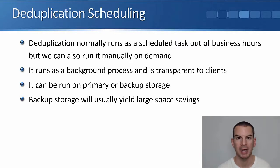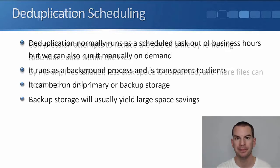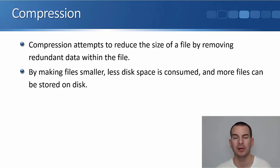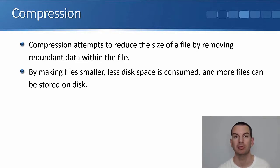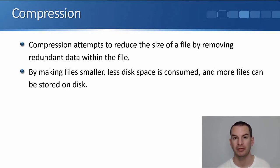Next, let's look at compression. Compression is very similar to deduplication and we have it for the same reason — to save disk space. But where deduplication looks for duplicate blocks in a volume, compression attempts to reduce the size of a file by removing redundant data within the file. So deduplication works at the block level; compression works at the file level. By making files smaller, less disk space is consumed and more files can be stored on disk.